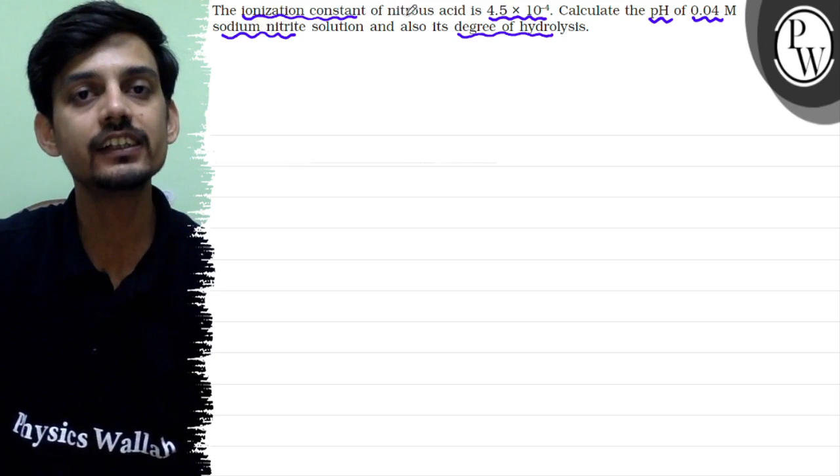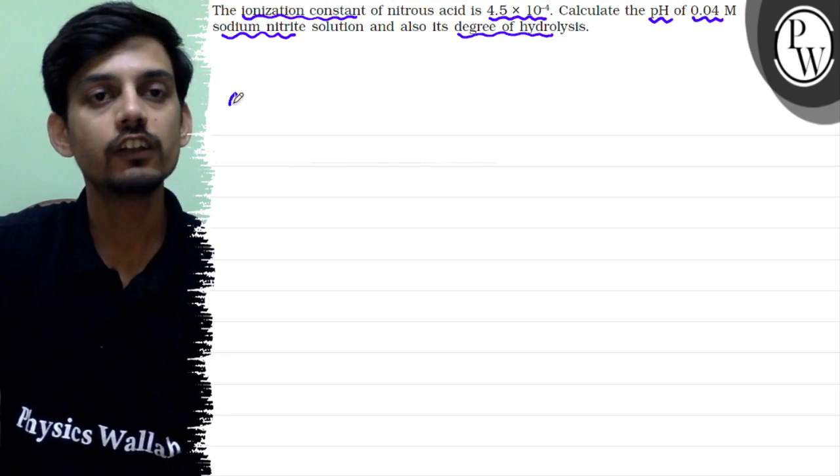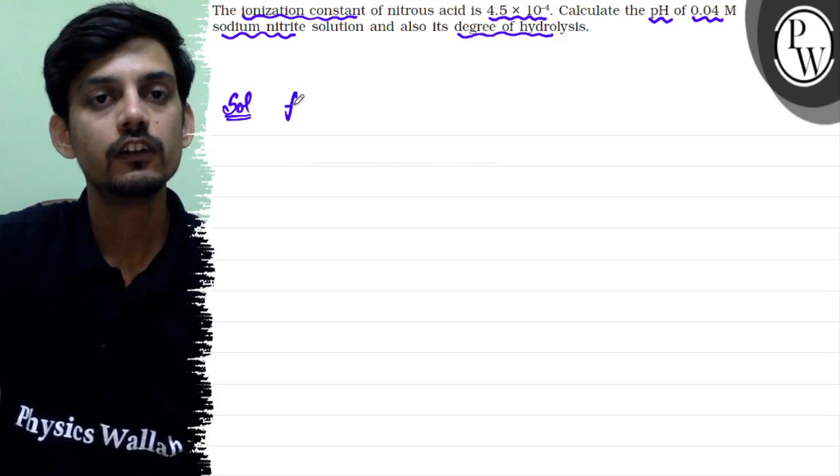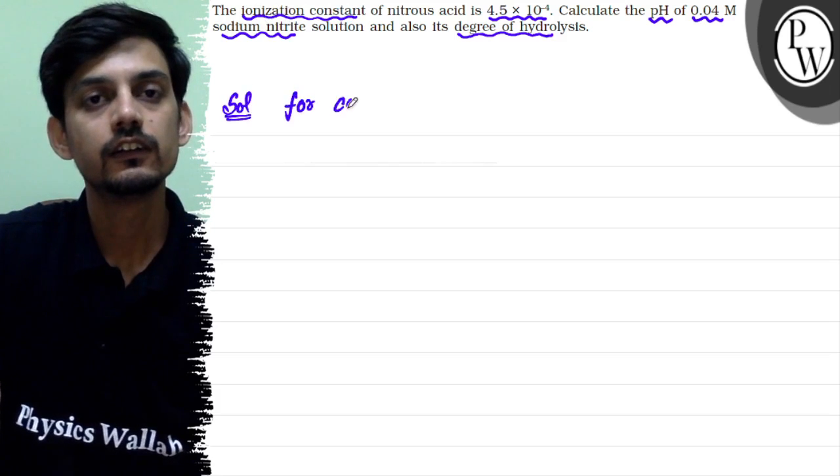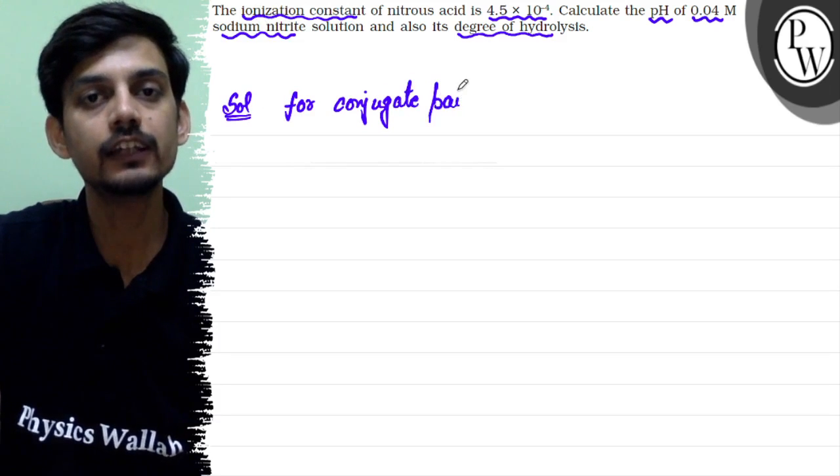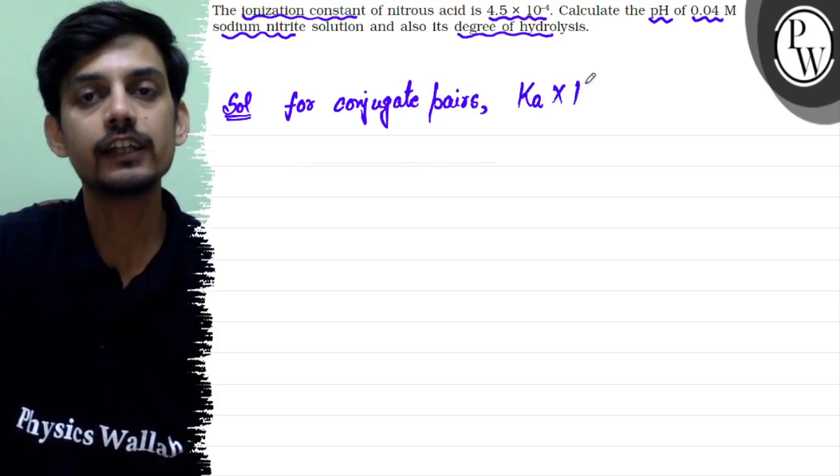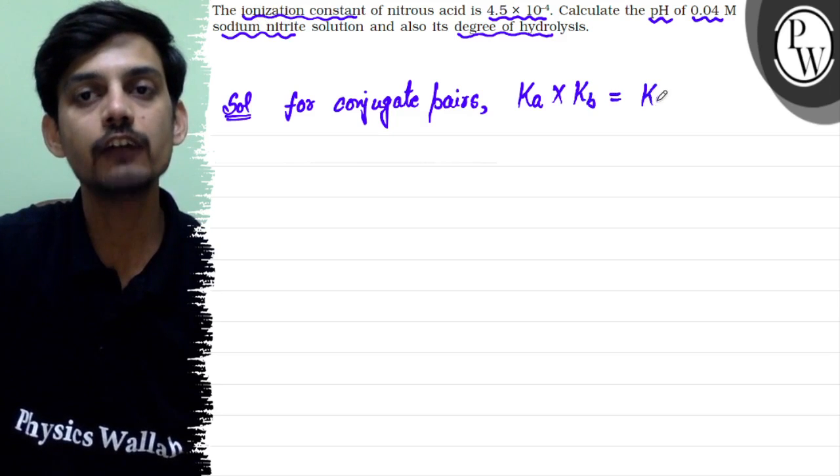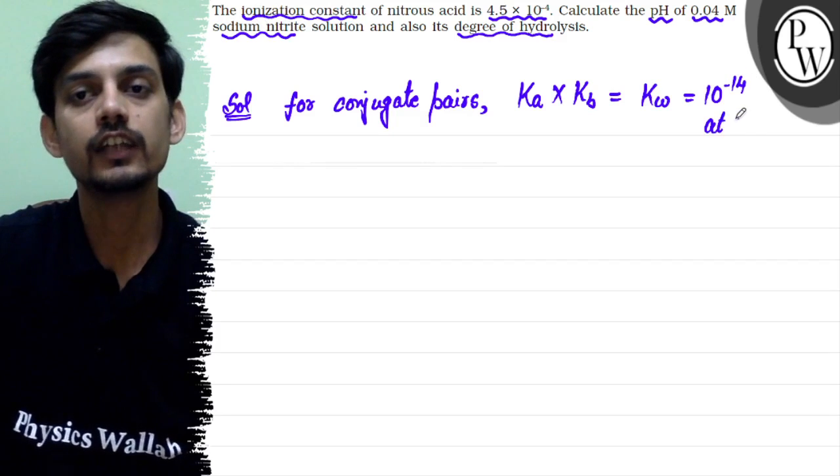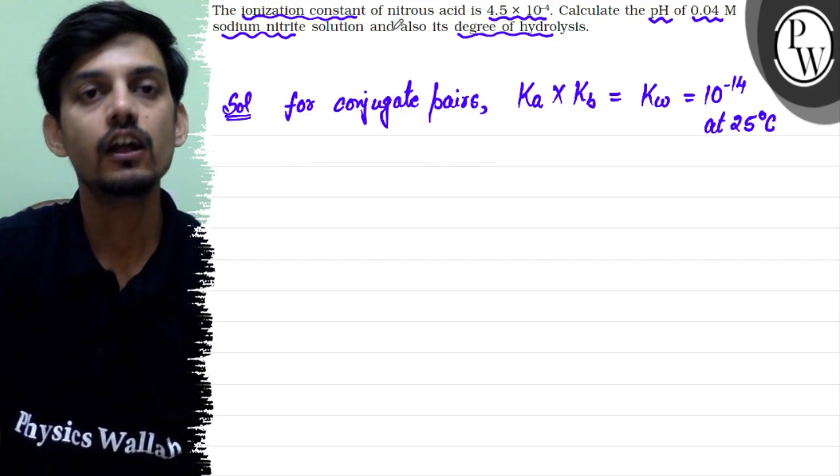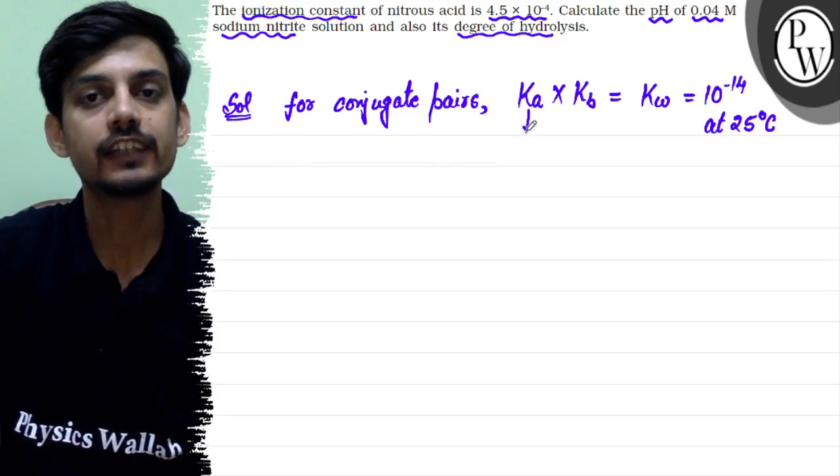And the conjugate acid nitrous acid, we have K given. Let's solve the question. First of all we can see from that conjugate pair in aqueous medium, conjugate acid-base pairs, ionization constant product equals water ionic product which is 10^-14 at normal room conditions which is 25 degrees Celsius. So we have Ka given, now for the nitrite ion Kb, in this case of HNO2 nitrous acid.